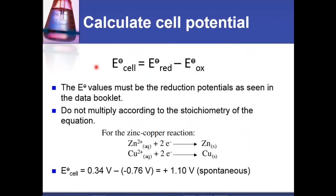Let's calculate cell potential using this equation. The circle with a line through it denotes standard conditions. The cell potential equals the standard electrode potential of the reduction half cell minus the standard electrode potential of the oxidation half cell. The values used must be the reduction potentials as given in the data booklet — do not change the sign, and do not multiply values according to the stoichiometry of the equation.